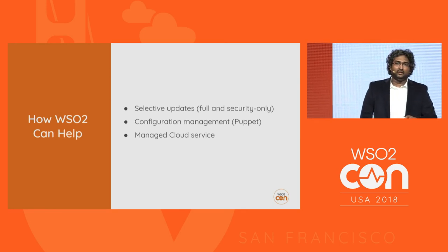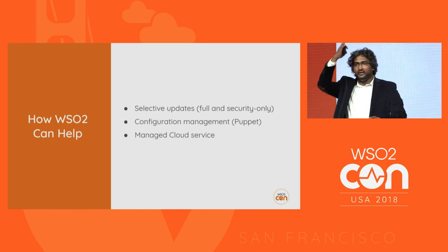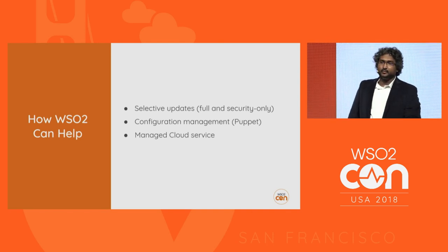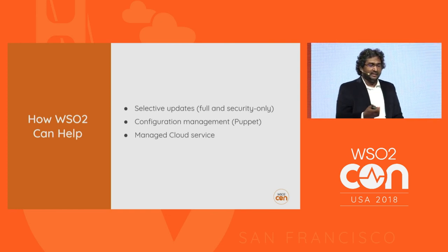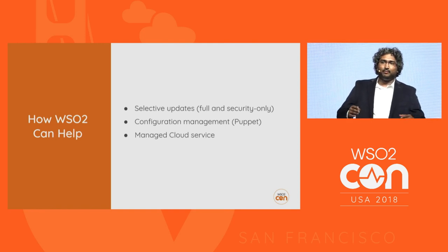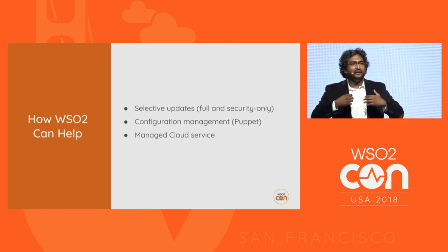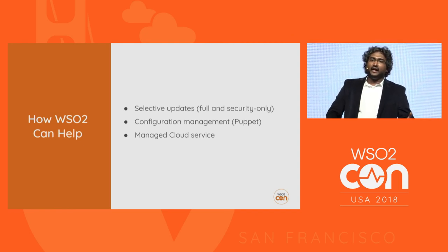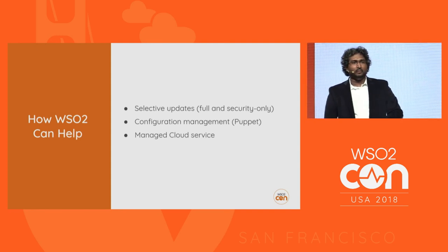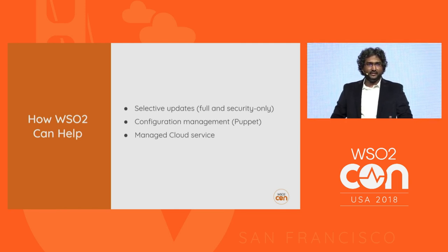For configuration management, right now we have Puppet — you can get Puppet modules written for all products from our public GitHub repository — and we are updating those Puppet modules to Puppet 5, while also working on releasing Ansible modules similar to Puppet for all products. And lastly, the managed cloud service collects everything mentioned during this presentation and provides it as a managed service, where WSO2 is responsible for running end-to-end pipelines for you. If you want to know more, you can talk to Sanjay — he owns the managed cloud space — or find any other WSO2 person.